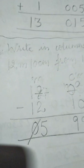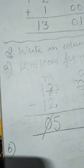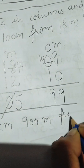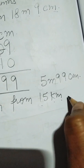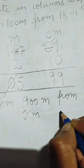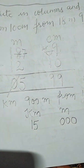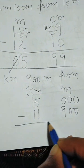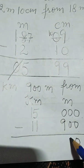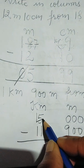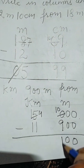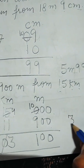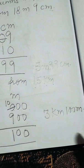Part B: subtract 11 kilometer 900 meter from 15 kilometer (meters not given, so we put three zeros: 000). We write 15 kilometer 000 meter minus 11 kilometer 900 meter. 0 minus 0 is 0, 0 minus 0 is 0. 0 minus 9 is not possible, so we borrow: left 4, becomes 10. 10 minus 9 is 1. 4 minus 1 is 3. 1 minus 1 is 0 — we ignore it. Answer: 3 kilometer 100 meter.